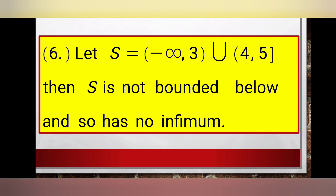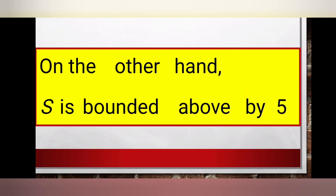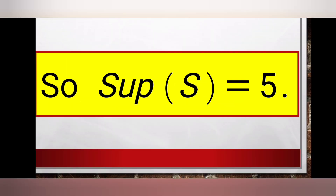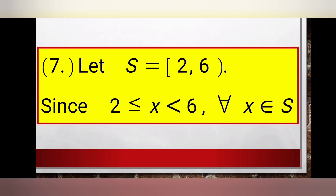Example six: S is the union of two intervals — the open interval (−∞, 3) and the half-open interval [4, 5]. Looking at this set, S is not bounded below and so has no infimum. On the other hand, S is bounded above by five, and every upper bound of S must be greater than or equal to five. So the supremum of S is equal to five.